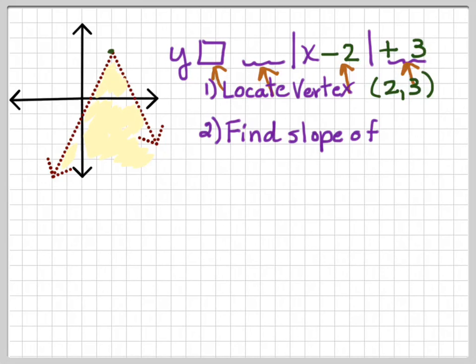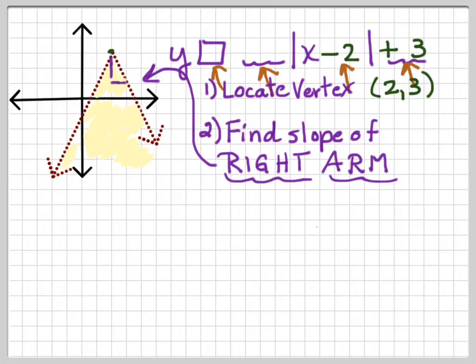And then we want to find the slope of the right arm, just the right arm. We don't care about the left arm. Just the right arm, and the right arm is right there. And that slope is down 2 to the right 1. Let's get that right. So our slope is negative 2.